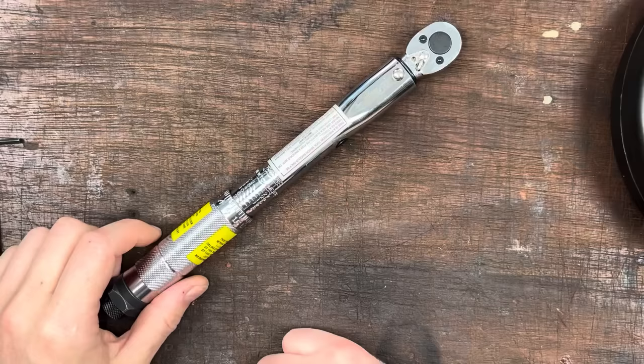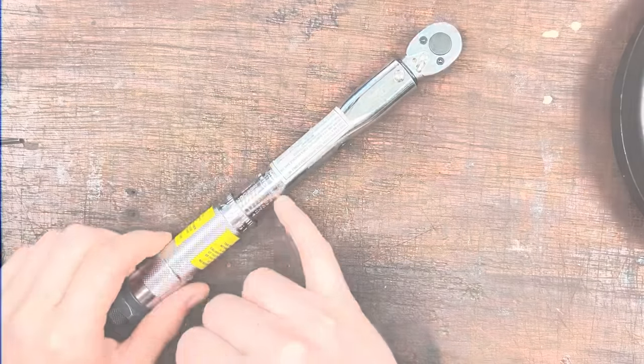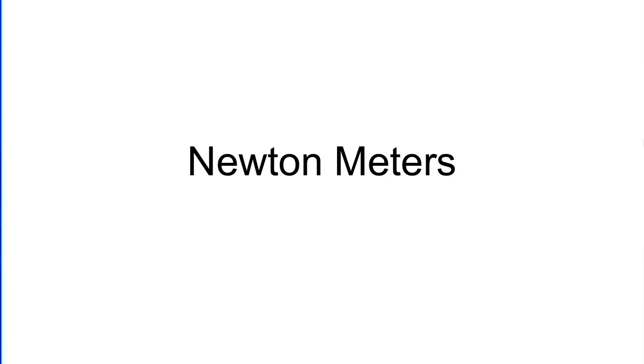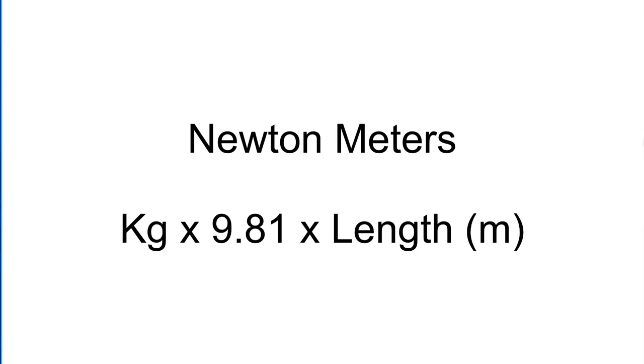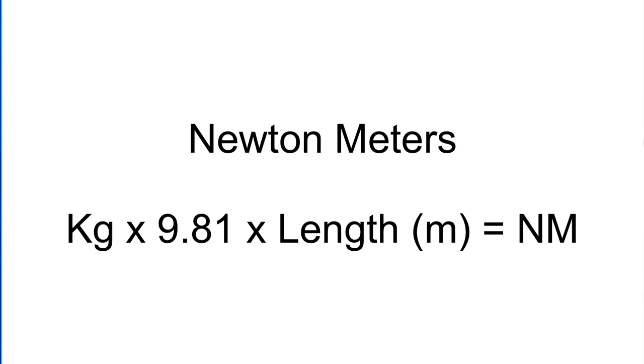So we need to know a very simple equation. Please don't get hung up on it, it really is simple, don't look into it any further than you need to. If we're working with a metric torque wrench, which will be in newton meters, we need to use the equation weight in kilos times by 9.81 times by the length in meters, that will give us newton meters.